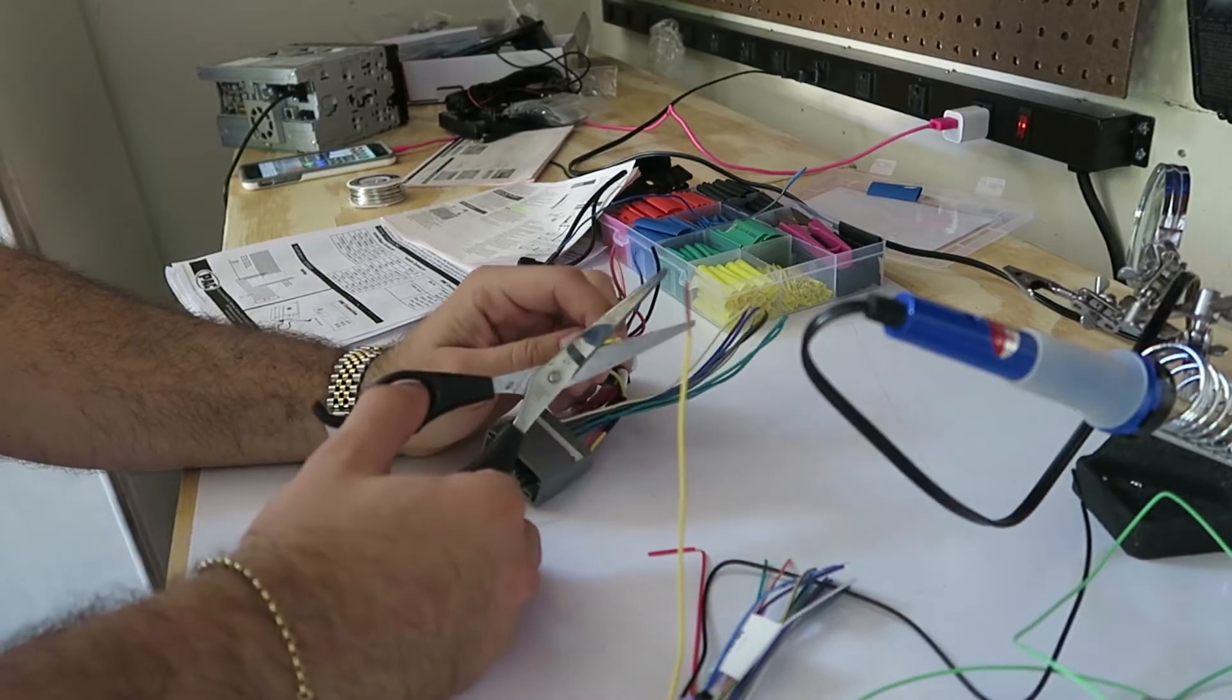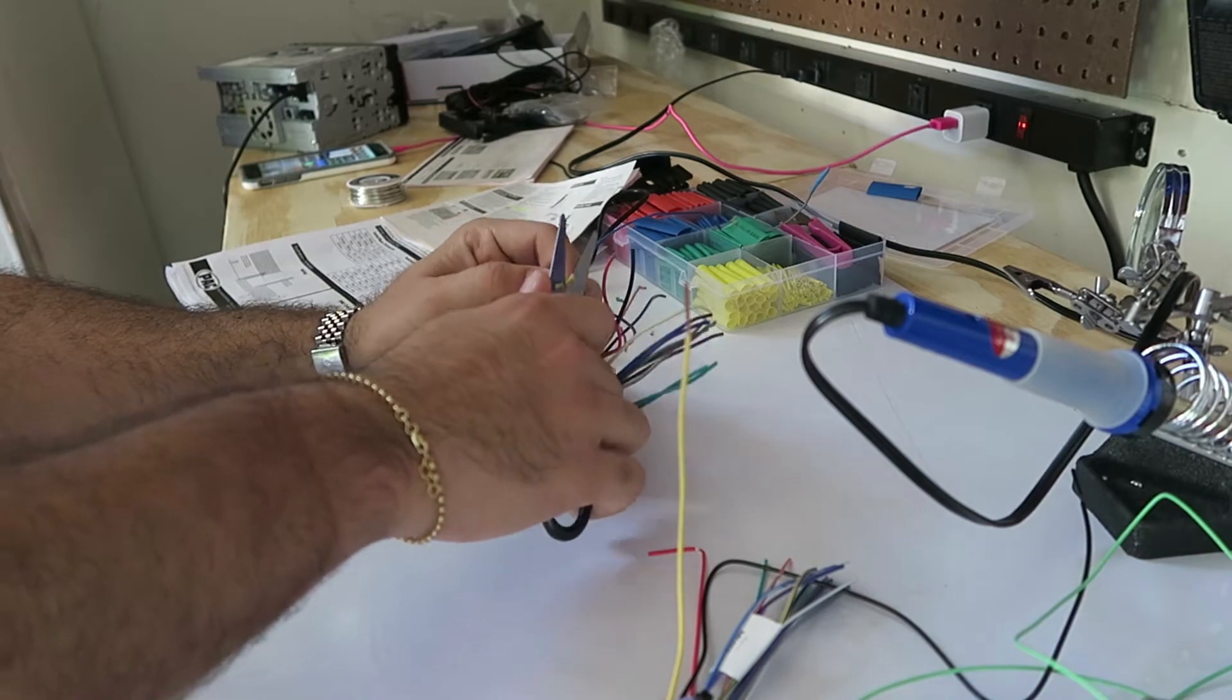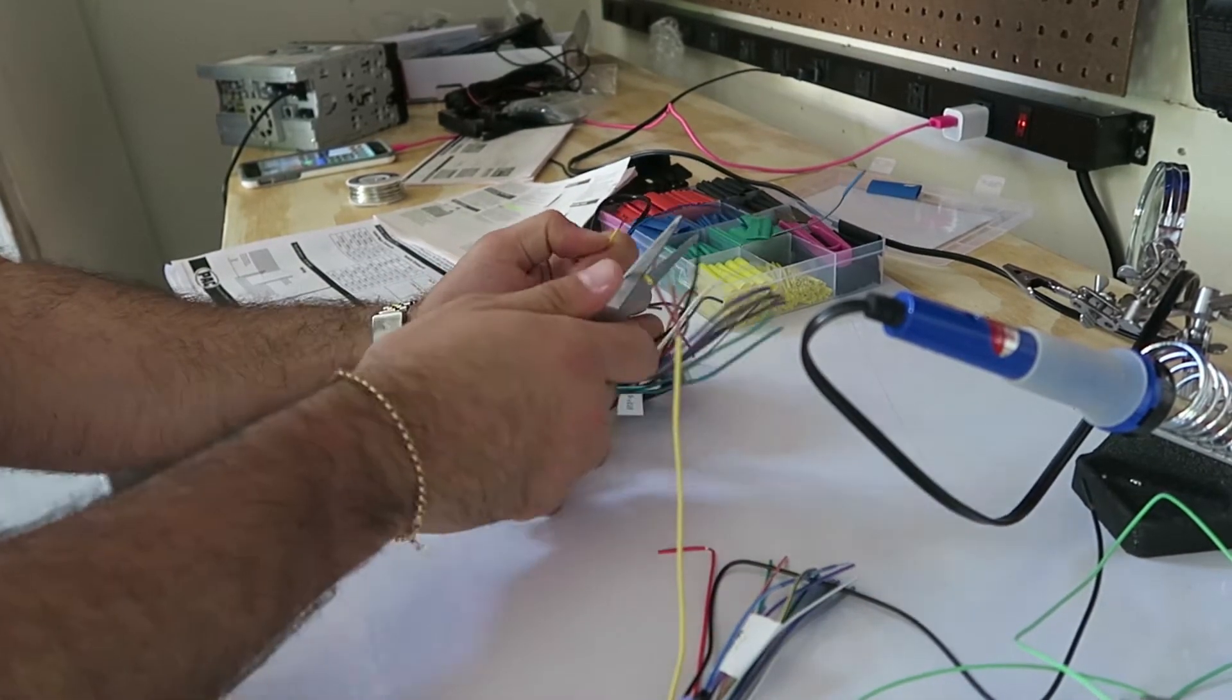All I'm going to do is kind of take the scissors and go around it lightly, just strip off the cable coating like that.